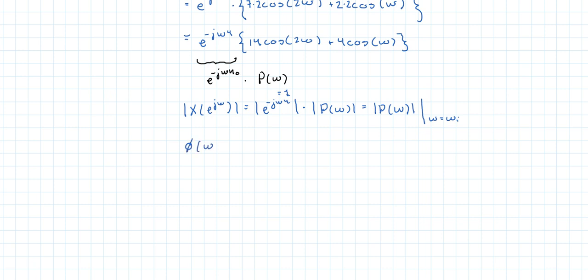Now let's say that you want the argument of all that. So you would get the sum of the arguments, so you would get the argument of e to the minus j omega 4, which is minus 4 omega. The argument is what is multiplying the complex number j. And then you would get the argument of p of omega and that's really just some constant times omega, and this is called a linear phase.